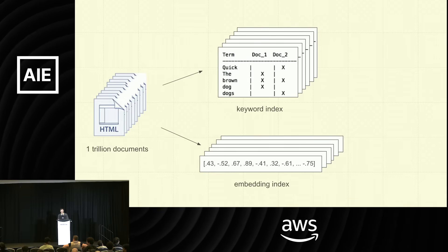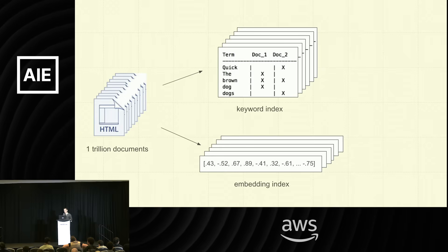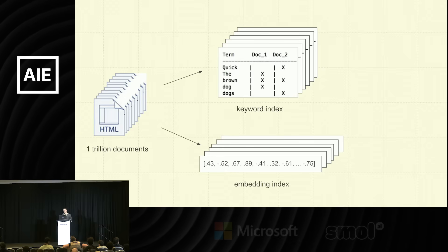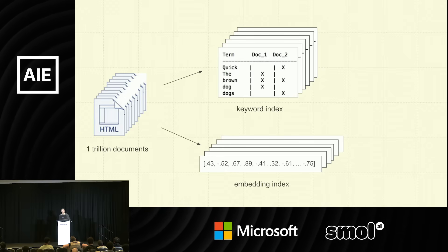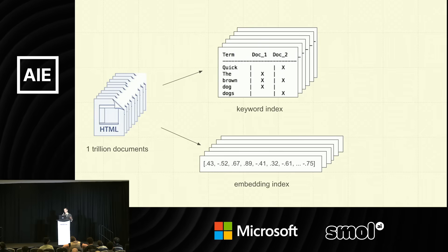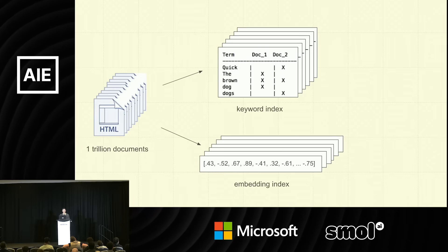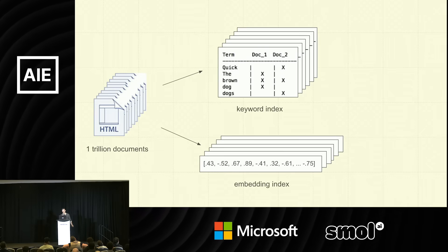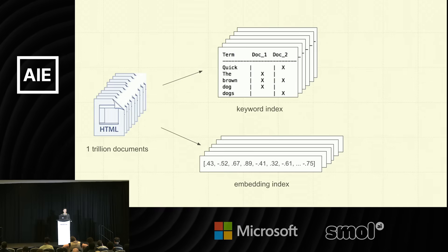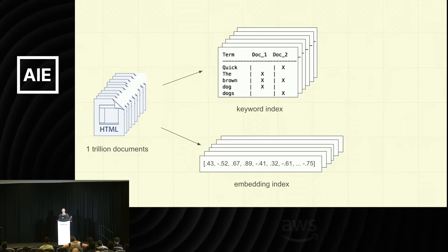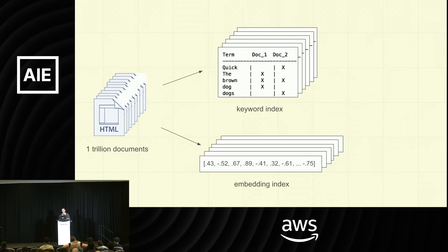But the idea was: with transformers, what if you could turn each document not into a set of keywords but into embeddings? These embeddings can be arbitrarily powerful — an embedding is just a list of numbers, and it could represent lots of information. An embedding doesn't just capture the words in the document, but also the meaning, the ideas in the document, and the way people refer to that document on the web.